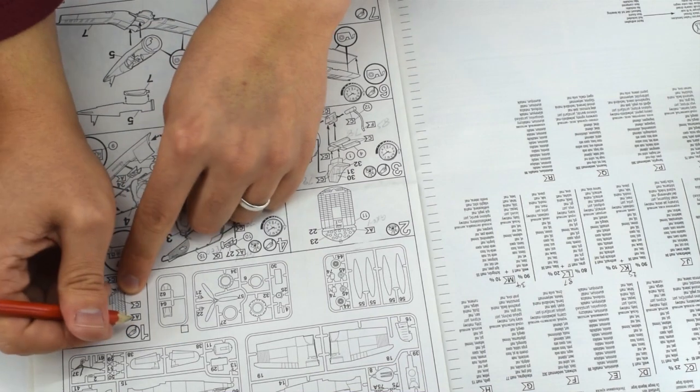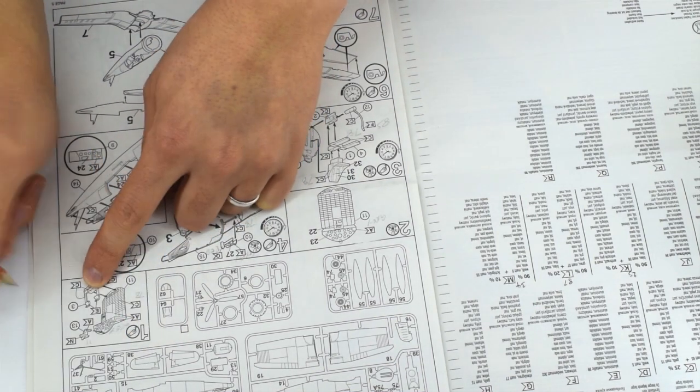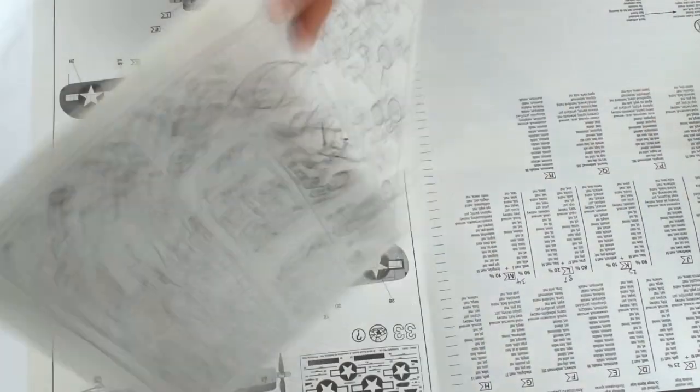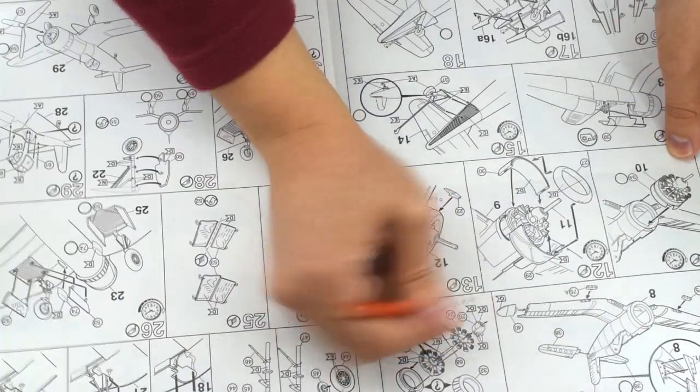Whilst the parts were air drying, I went through the instructions and wrote on the paint numbers that I was going to use. Although Revell have their own way of indicating the paints to be used, I find that it's not the best, so I chose to do this to make it easier for me.